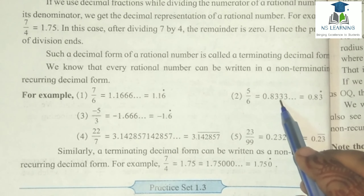Such a decimal form of a rational number is called terminating decimal form. This type of decimal form is called a terminating decimal.